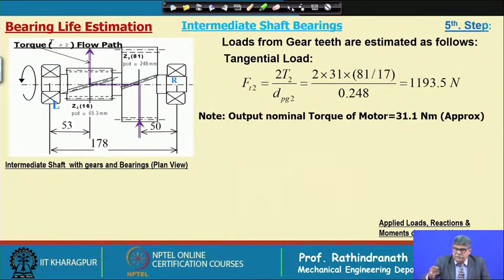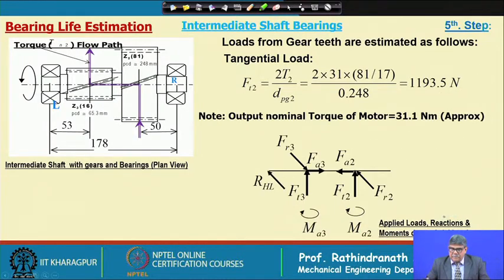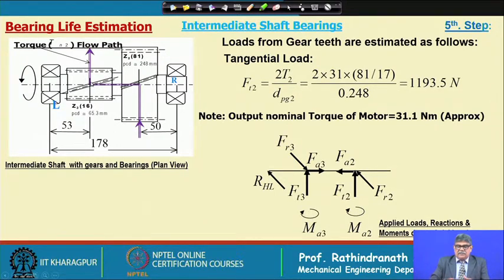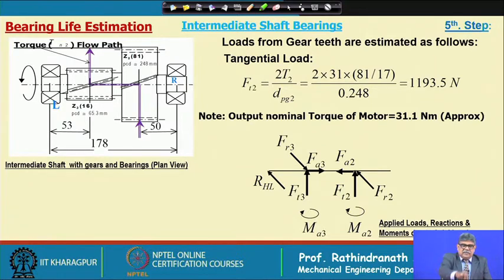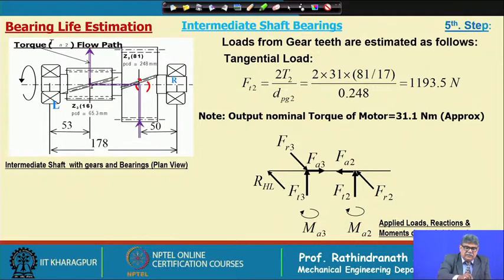Next we are considering the loads on this shaft. If we consider this pinion — this is pinion 3, gear number is taken as 3 — for the radial load, considering that the gear is on the other side below this and pinion is on top, the directions of load will be as shown.